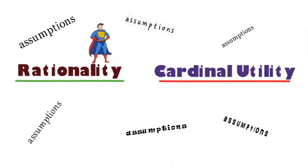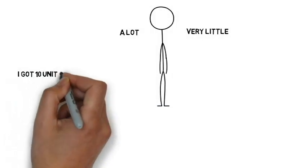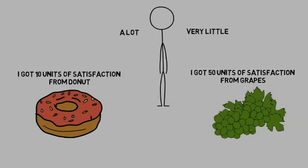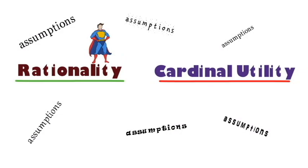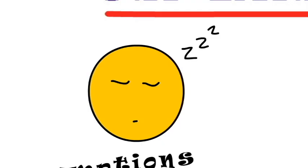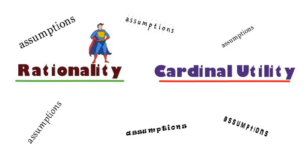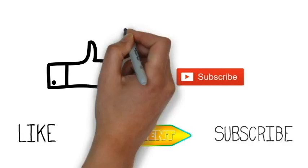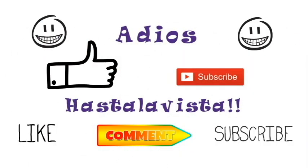Secondly, remember from the first video of consumer behavior in utility analysis, we learned that utility can only be measured ordinarily — we cannot give numbers and say that I got 10 units of satisfaction from this commodity or 20 units from another. We can only say that I liked a certain commodity more or less. However, in this law, we assume that cardinal measurement of utility is possible. Hope you liked the video — if you did, press the like and subscribe buttons and don't forget to comment. Till then, adios, hasta la vista.